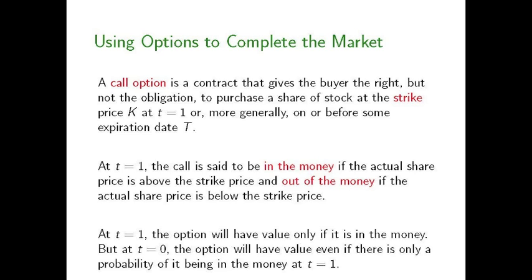In this particular case, where there are only two periods, the call option allows the buyer to purchase a share of stock at that strike price at the end of the investment horizon, period T equals one. More generally in a multi-period setting, the call option would allow the buyer to purchase a share at the strike price on or before some expiration date, capital T. At T equals one — at expiration — the call is said to be in the money if the actual share price is above the strike price, and out of the money if the actual share price is below the strike price. An option will have value only if it is in the money, allowing the holder to purchase at a strike price below the market price, and zero value otherwise. Moving back to today, T equals zero, the option has value even if there's only a probability of it being in the money at T equals one.